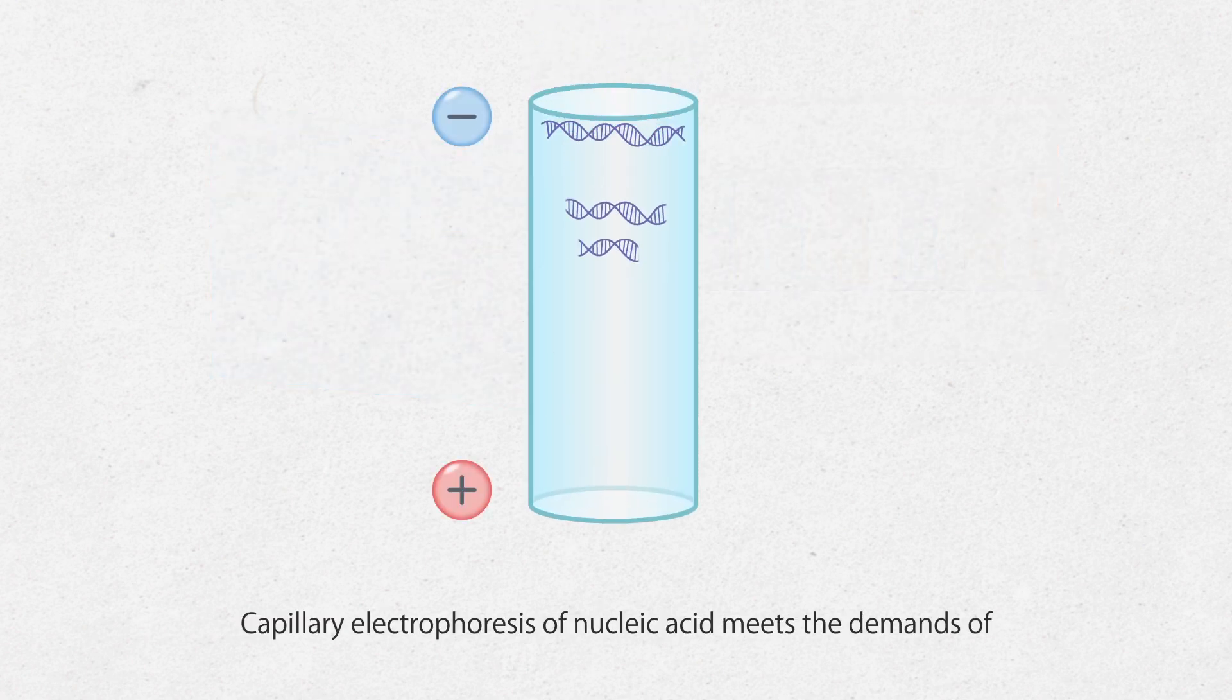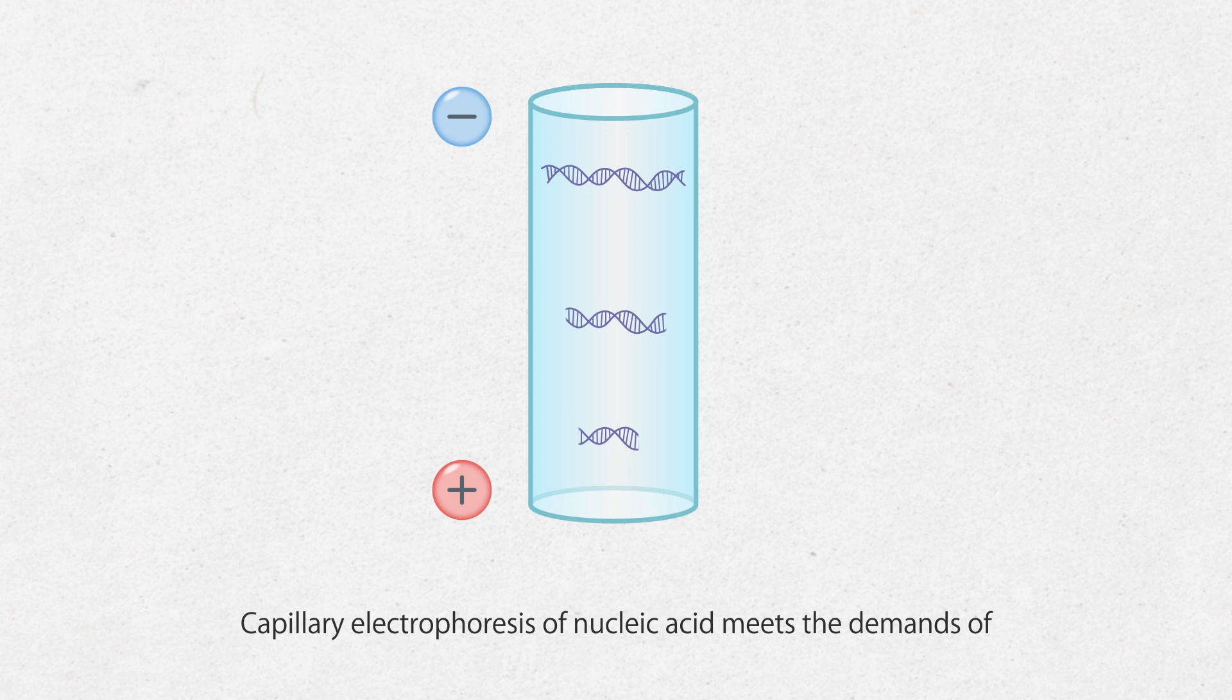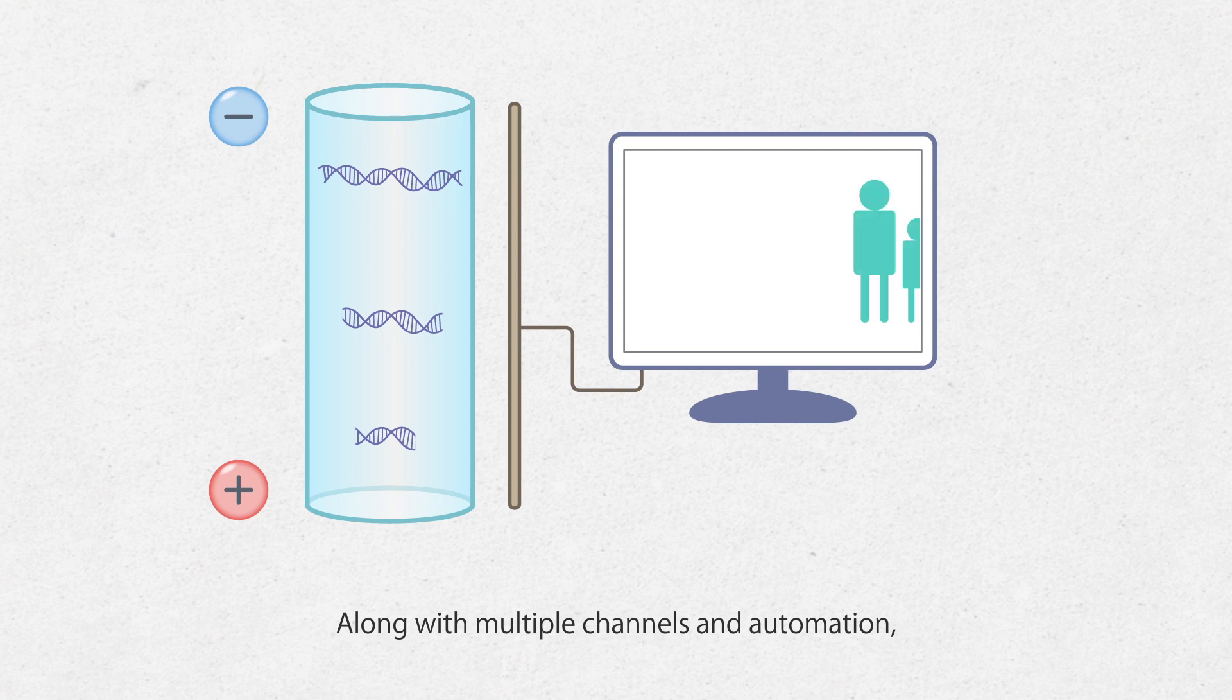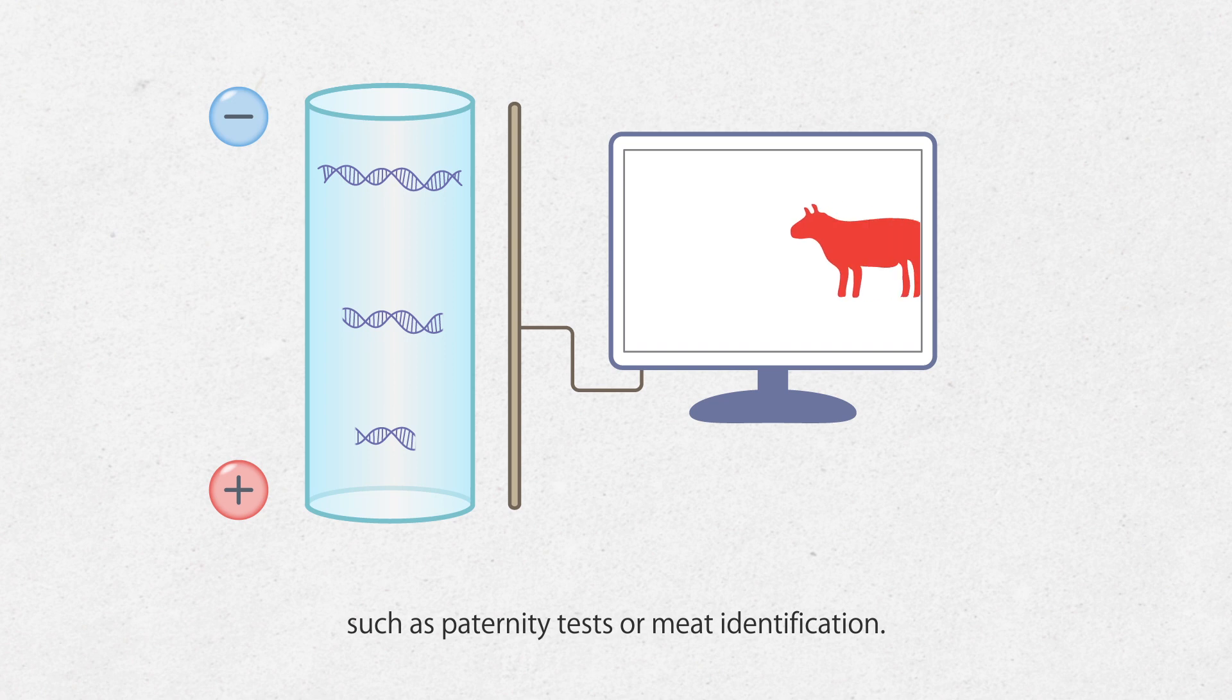Capillary electrophoresis of nucleic acid meets the demands of less sample and high separation speed. Along with multiple channels and automation, the efficiency and accuracy are significantly improved. This technology can also be applied in forensic science such as paternity tests or meat identification.